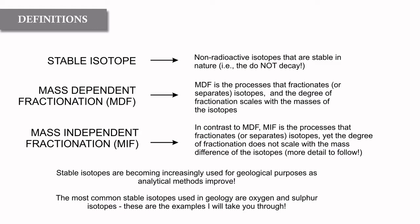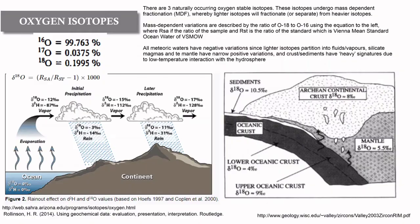Stable isotopes are becoming increasingly used in geological purposes - things like iron isotopes, copper isotopes, titanium isotopes - but perhaps the most commonly used stable isotopes in geological systems are oxygen and sulfur. I'm going to give examples of oxygen and sulfur as those are the systems I'm more familiar with myself.